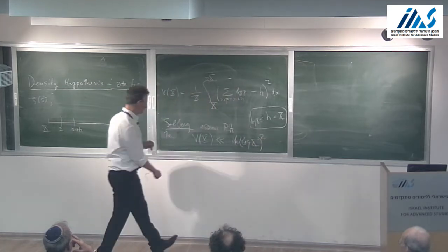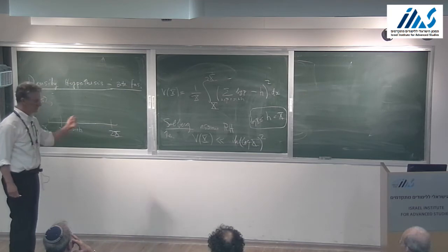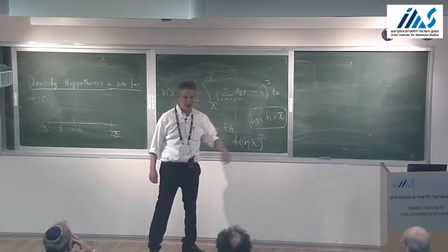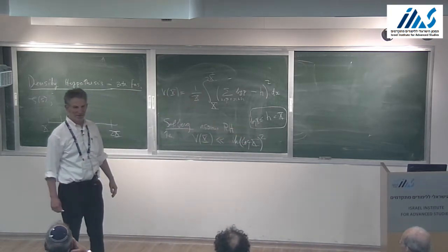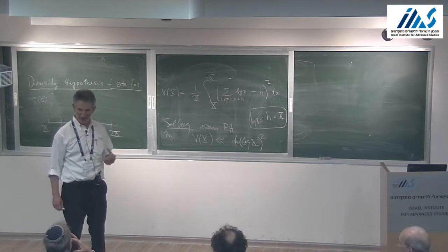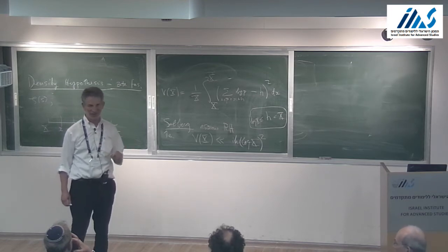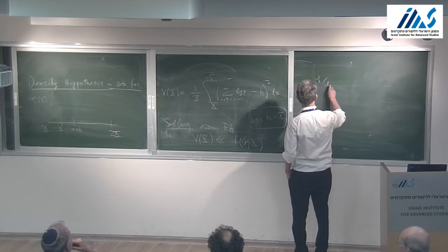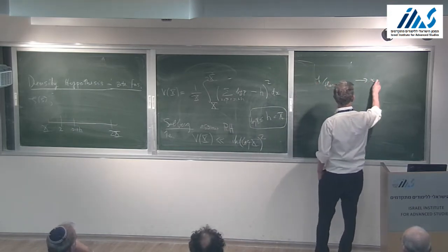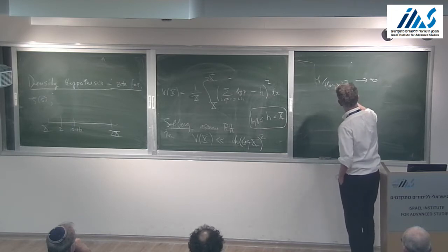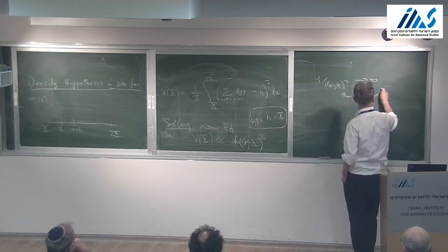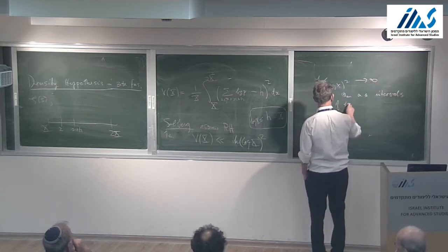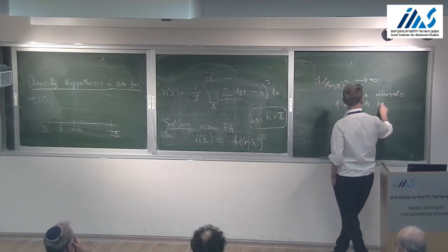That's an upper bound assuming the Riemann hypothesis, valid for every h bigger than log x. This already implies, under the Riemann hypothesis, that almost all intervals of length h—as long as h over (log x)² goes to infinity, which is plenty good—contain a prime. This is certainly quite a strong statement.